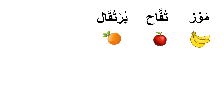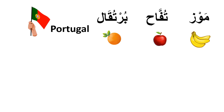Next is برتقال — orange. Sounds like Portugal, right? Well, it's not a coincidence. Arabs named oranges after the country of Portugal. It seemed that oranges were first introduced to Arabs through Portugal.